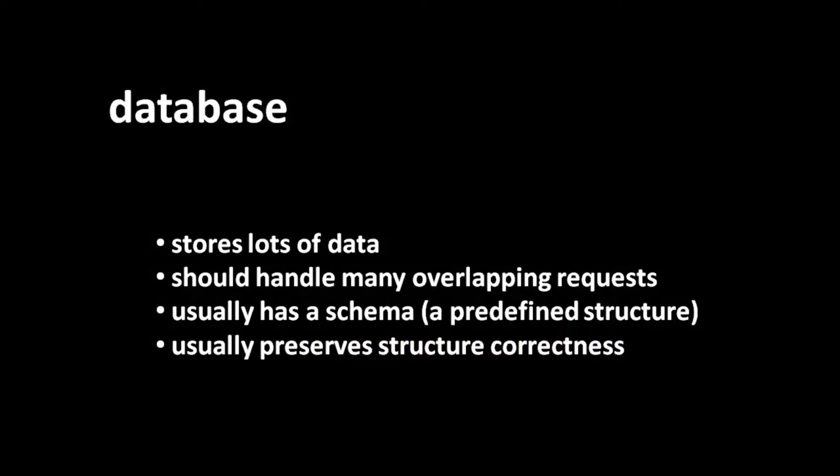What is a database? A database is basically any kind of system designed for storing lots of data. Typically it's a system made available on the network which handles many incoming requests, and those requests can overlap. Most often the database has been given a defined schema - an imposed structure on the shape of the data - and the database has mechanisms that ensure no one can insert, modify, or remove data in a way that violates the schema.